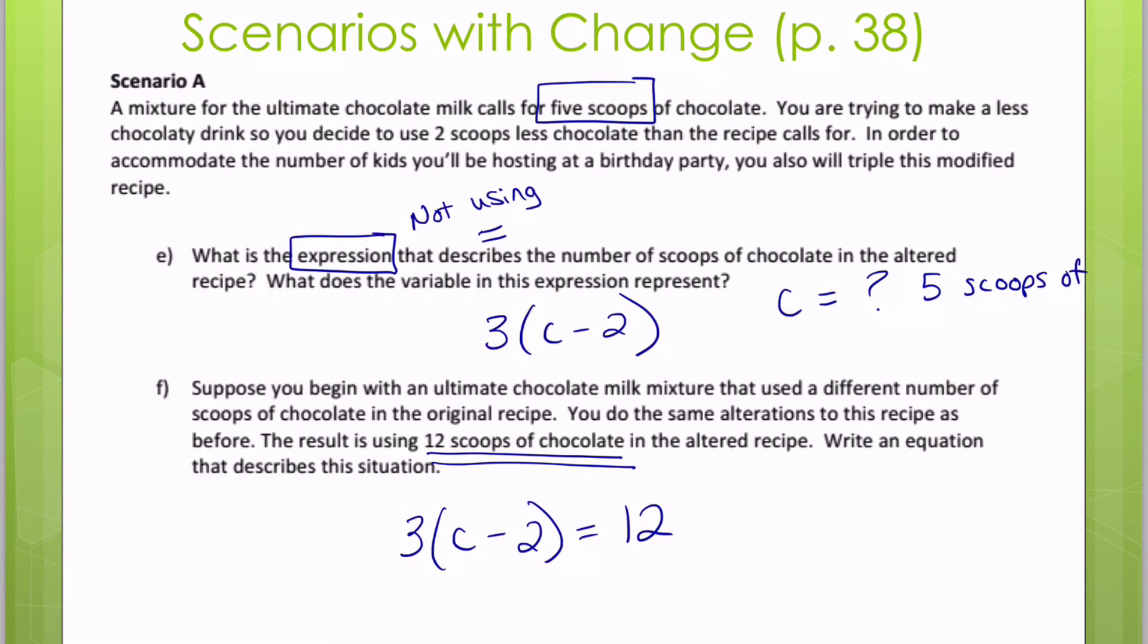So we actually know that C equals five scoops of chocolate. Sometimes people are confused because they think that, oh, I need to solve for that C. You don't actually, because again, you know that that's what we started with. This is why it's cool to know how the equation is built.